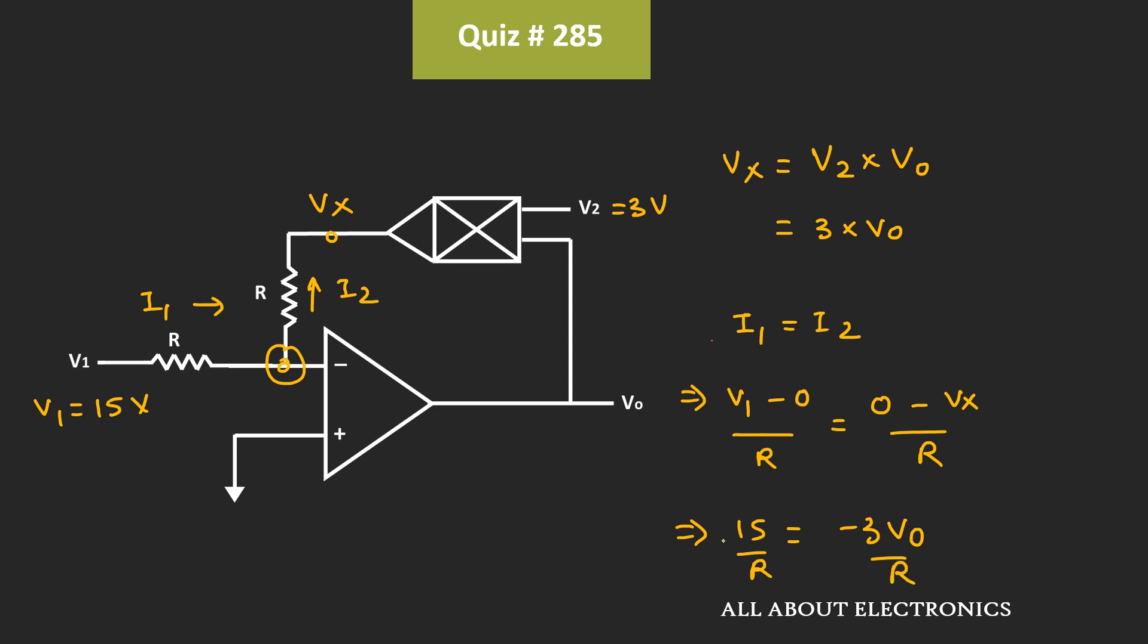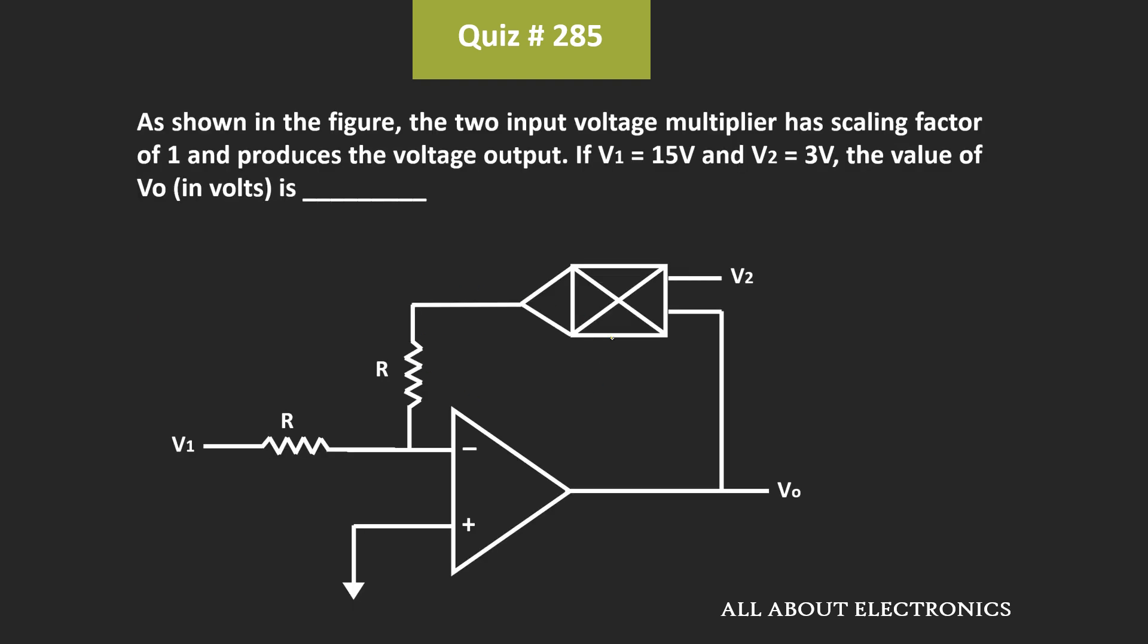And if we further simplify, then we can say that Vout is equal to minus 5V. That means for the given question, the value of the output voltage is equal to minus 5V.